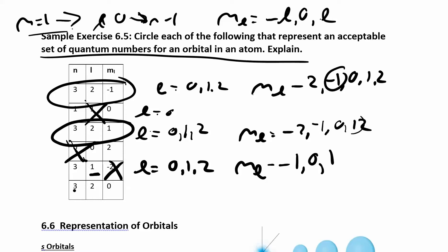The last one, if n is 3, l can be 0, 1, or 2. So that's OK. And then if l is 2, ml could be negative 2, negative 1, or 0. And it's 0. So this one's also fine.